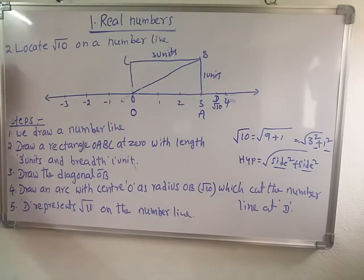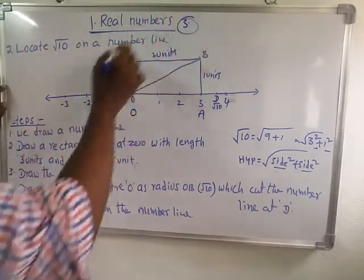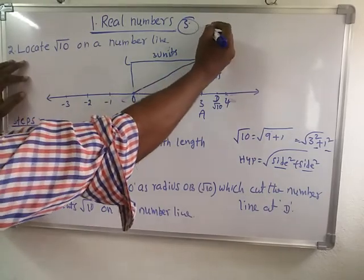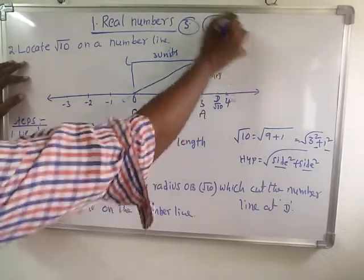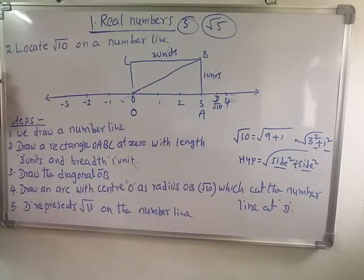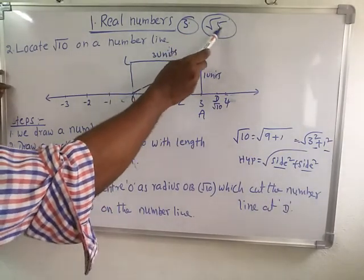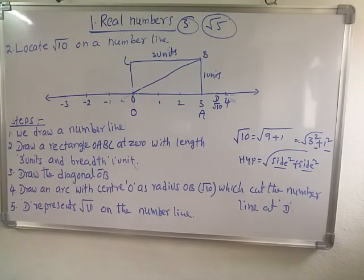Now the third one — you will do this one. Locate square root five on a number line. Tomorrow we will continue in the class.